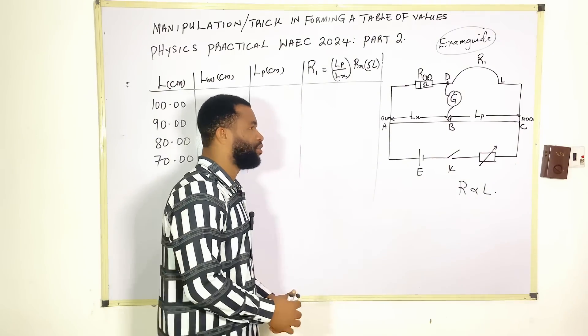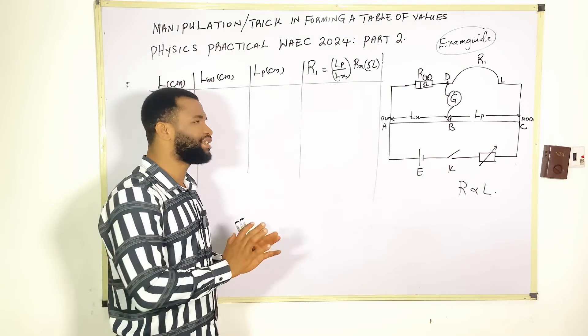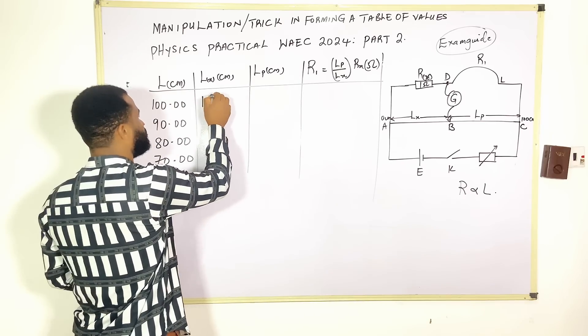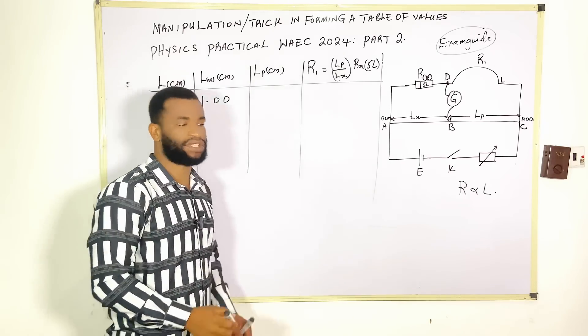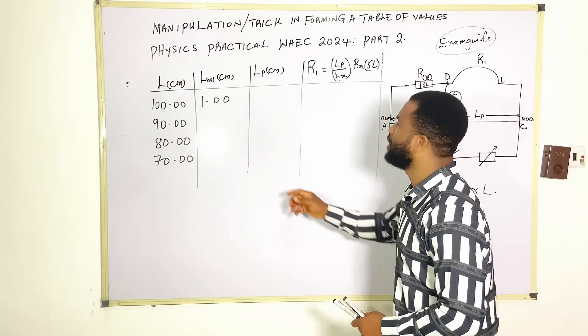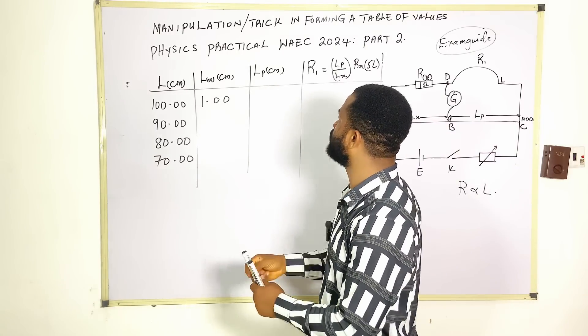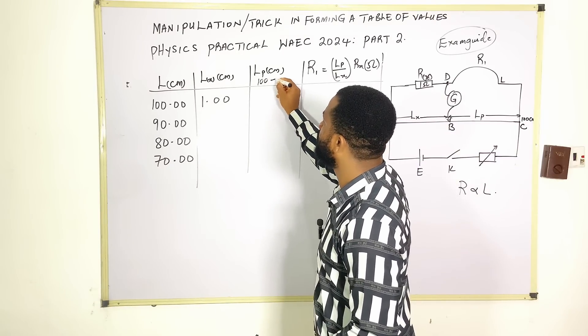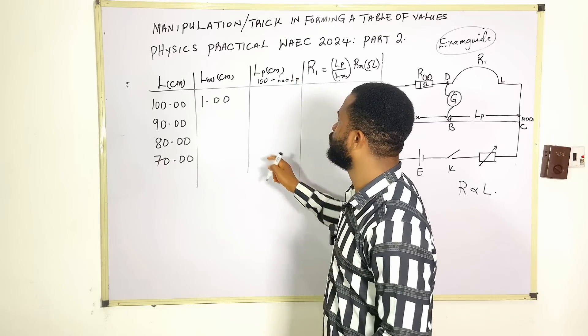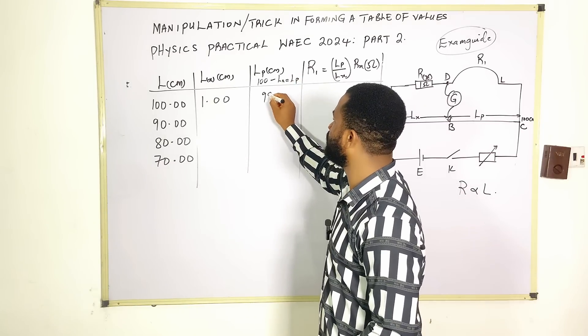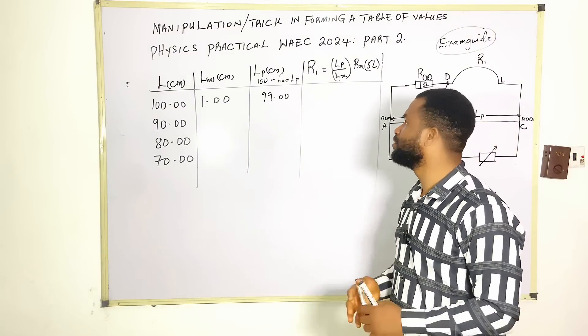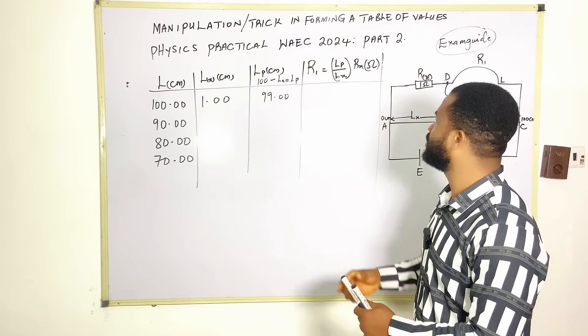Since I have performed the experiment, I know that my first balance point was 1.00. If 1 is my balance point, remember this value is 100 minus lx, and this is going to be lp. 100 minus 1, I'm going to have 99.00.